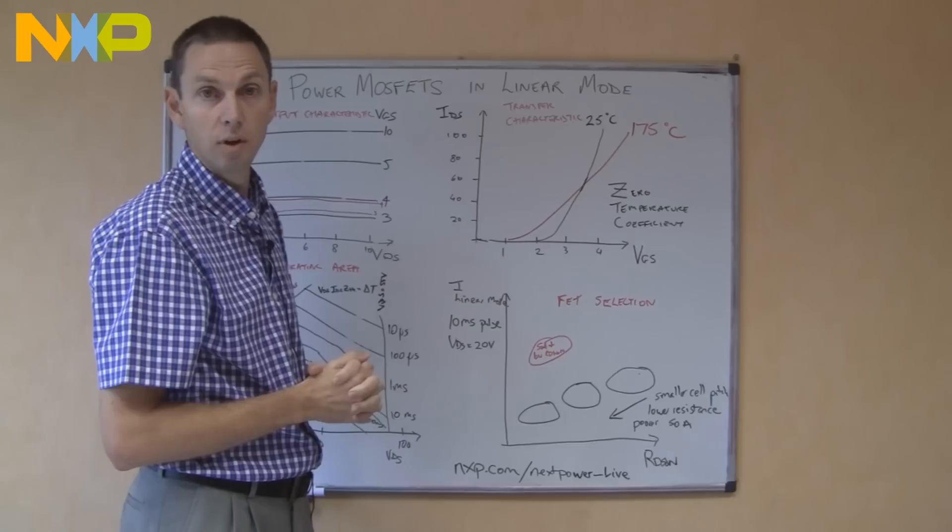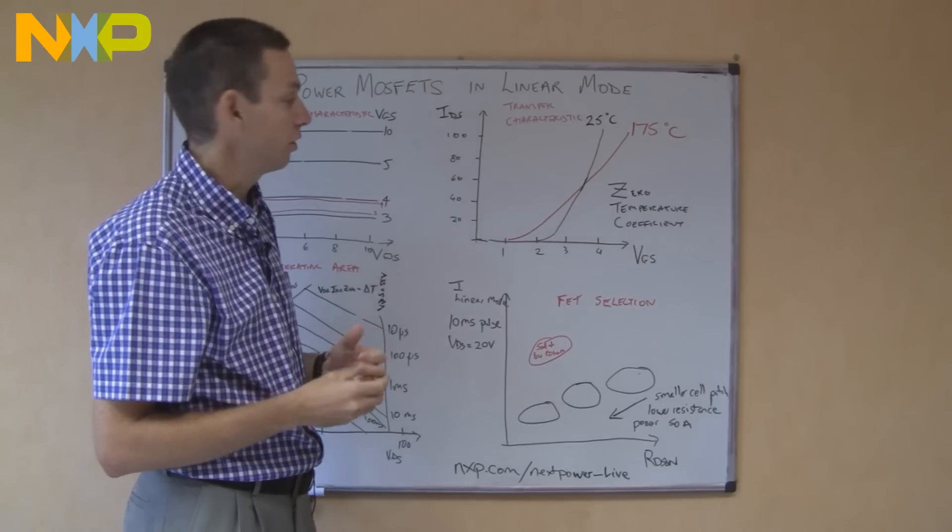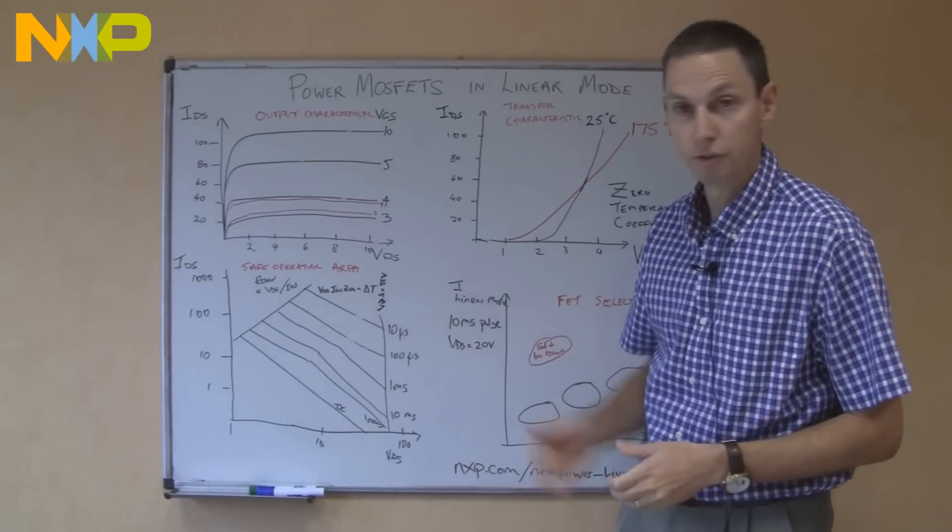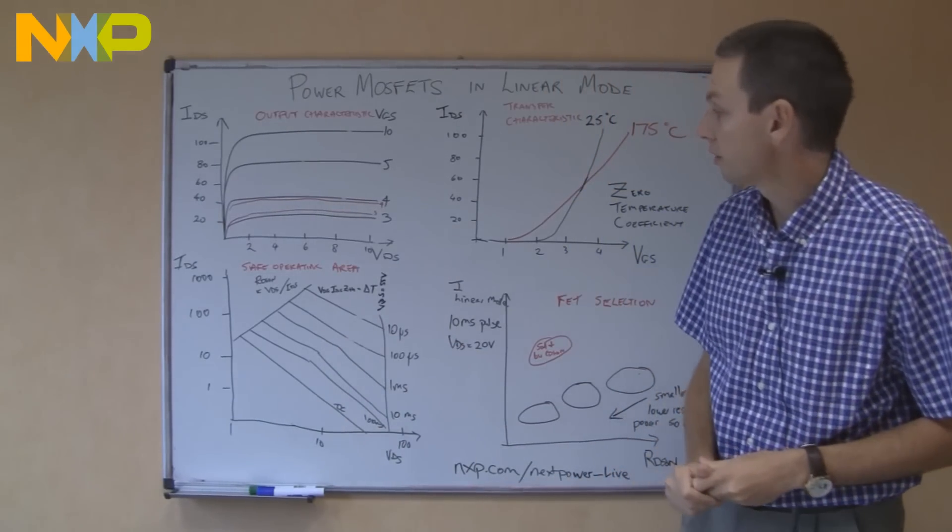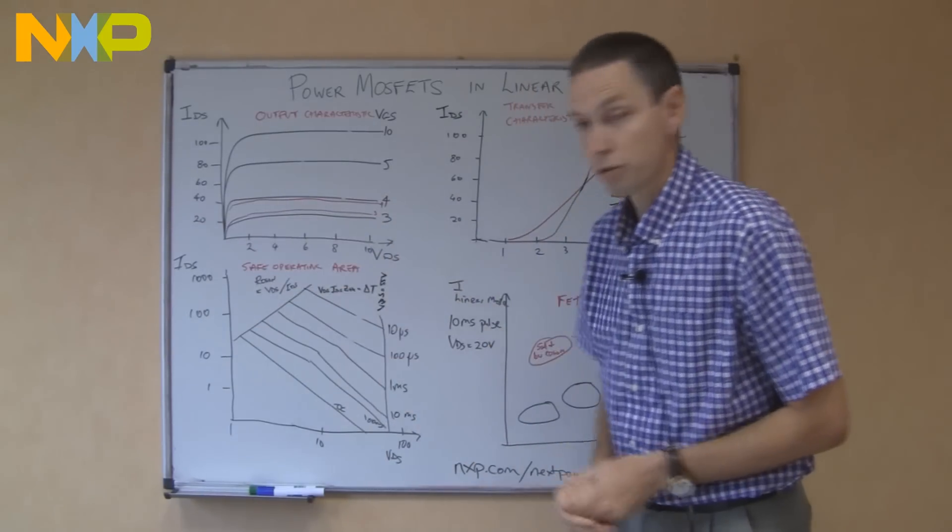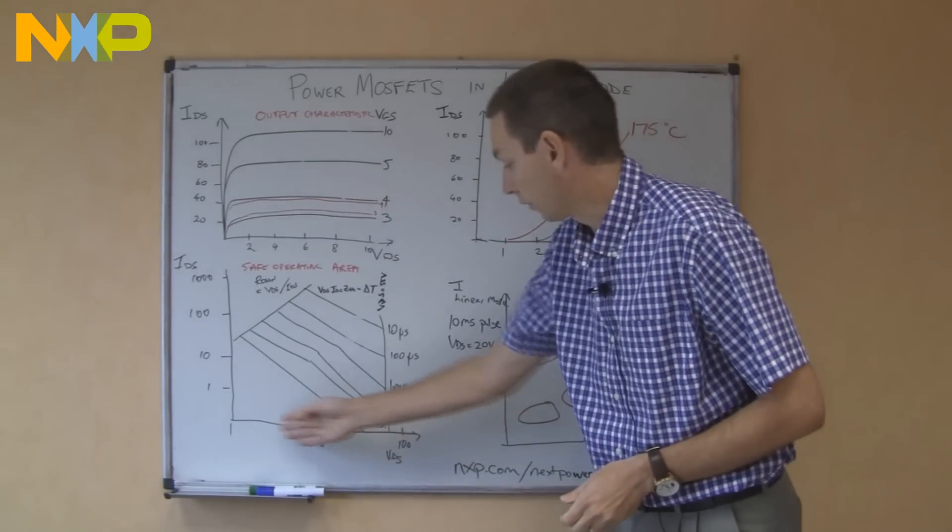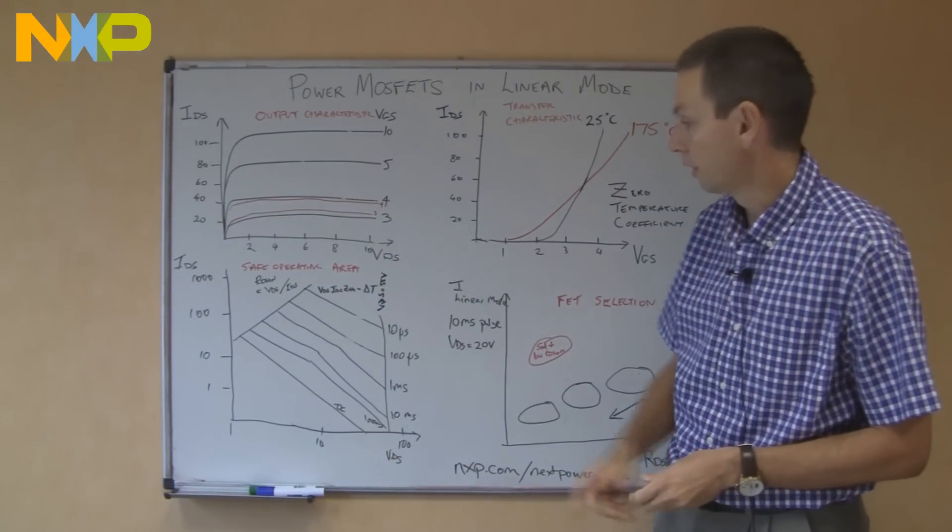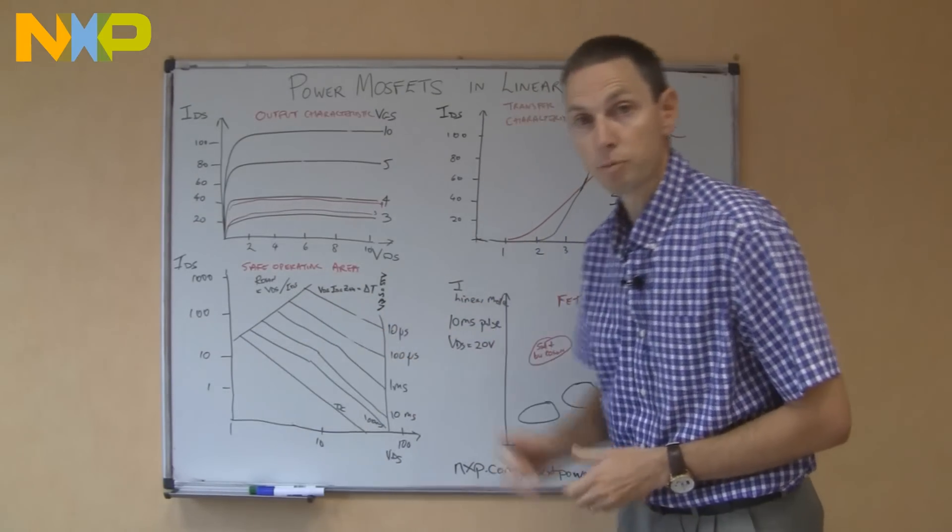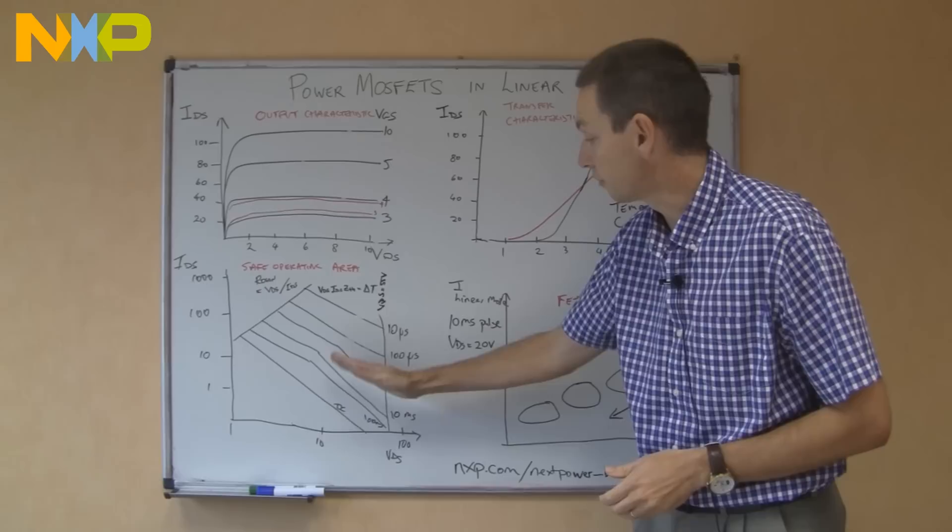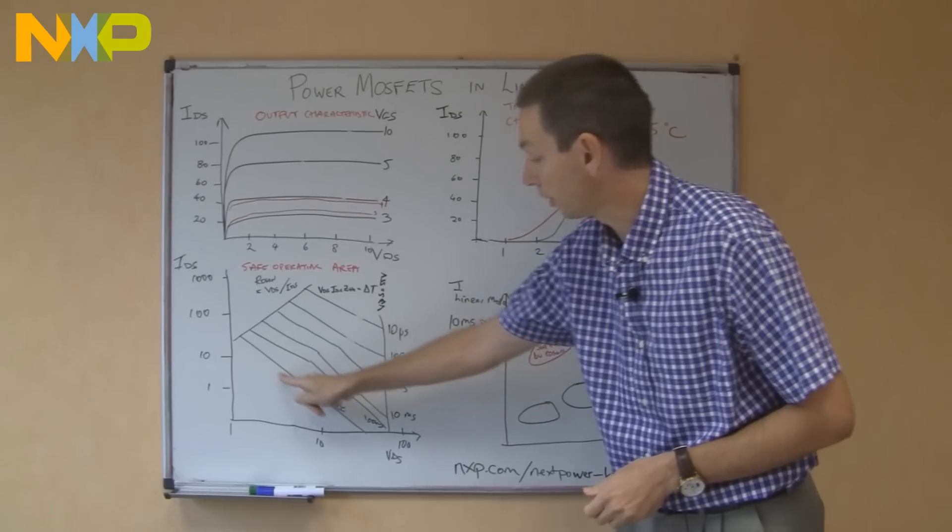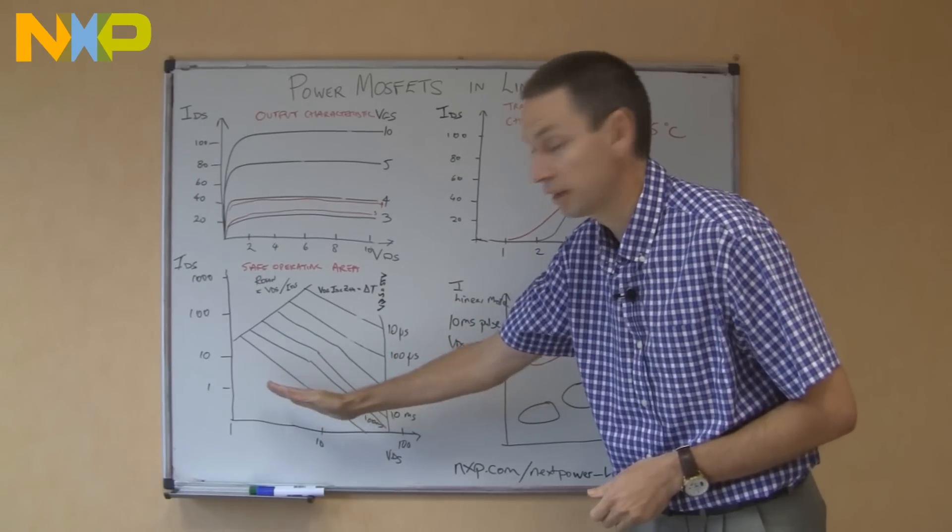So when you're designing your circuit, what advice is there? What can you find on the datasheet to help you? In the bottom left-hand corner, we've got another graph that you'll find on most typical datasheets, the safe operating area. Along the Y axis, we've got the source drain current. Along the X axis, we've got the source drain voltage. And there's a series of lines. If you stay below the line, you're in the safe operating area for the MOSFET.